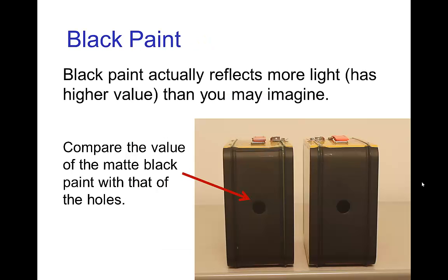Black paint we normally think of it as black, but that's only by comparison with contrasting objects around it. In this case we have a pair of lunchboxes which have a face that has been painted with the blackest, mattest paint we could find, and by itself it looks relatively black until you compare it with how black a hole that has been punched in the side of the lunchboxes look. So the hole is certainly much blacker than the black paint.